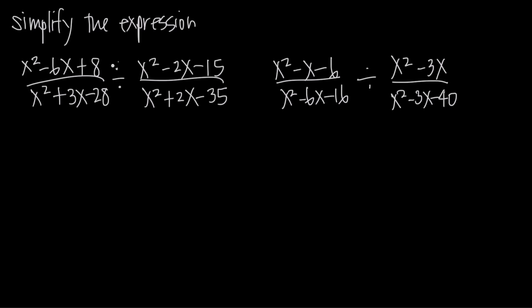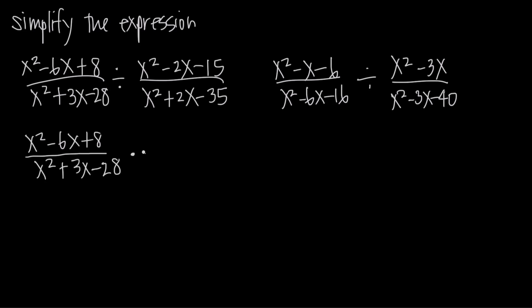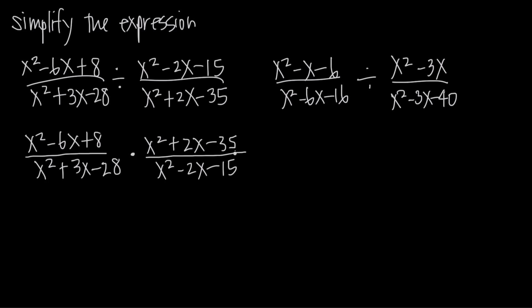By taking the reciprocal, we get to change the division to multiplication. So this becomes: we keep the first fraction exactly the same — x squared plus 3x minus 28 in the denominator — and instead of dividing, now we multiply. We just flip the second fraction upside down, so the numerator is now x squared plus 2x minus 35 and the denominator is x squared minus 2x minus 15. We can do that every time — it works every time.